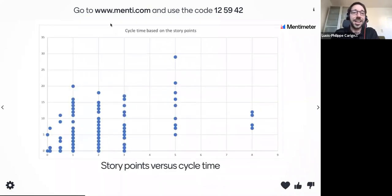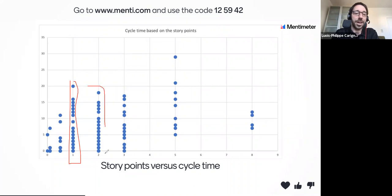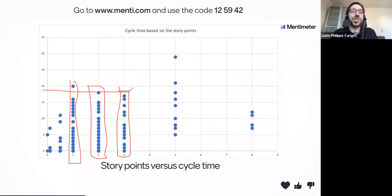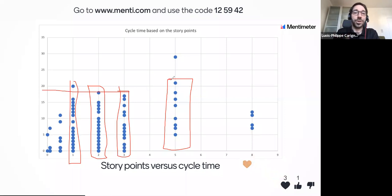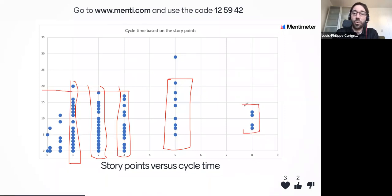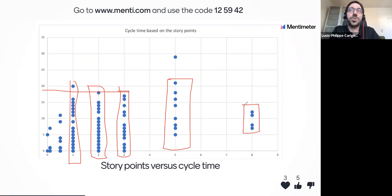In 90% of teams I've worked with in the last three years, one-point, two-point, and even three-point stories are all about the same cycle time value. That distribution where my one-point is anywhere from zero days all the way to 20 days — it just happens on any scale, two points, three points. And if you look at five points, it's also in that same range of five days all the way up to around 20 days. Even more surprisingly, my eight-point stories are also within that 20-day range. That makes me wonder: am I getting the right value from those story points?